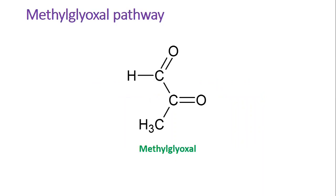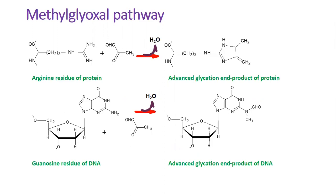Methylglyoxal is a compound formed during carbohydrate, lipid, and amino acid catabolism. On the one hand, it is an extremely toxic electrophile, potentially leading to death of cells. It can cause unwanted glycation of proteins and DNA, which results in the loss of their functions. On the other hand, it is ubiquitous and found in bacteria, plants, and animals. There are enzymes that control its production and transformation, which points to the fact that methylglyoxal also plays a physiological role in Escherichia coli and in other organisms.